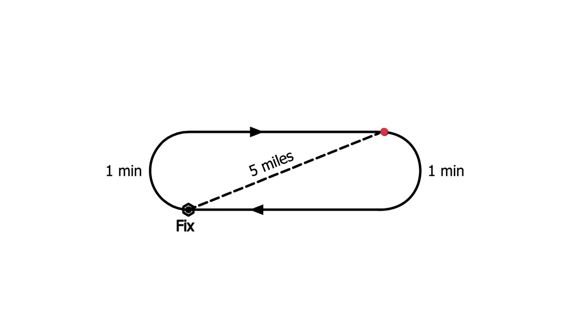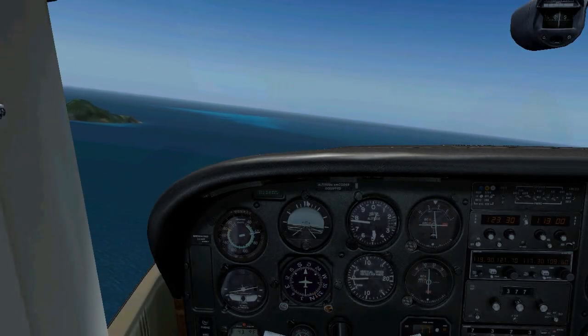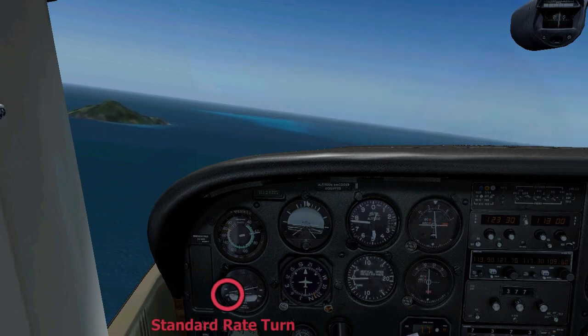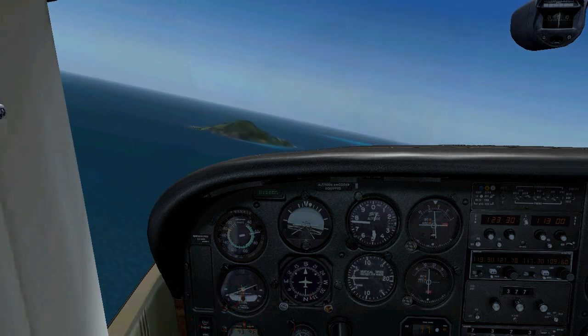Standard rate turns, we already said, are turns where we are turning 3 degrees a second. However, the rate of the turn depends on two things: on our airspeed and our bank. The faster we are flying, the more bank we need for a standard rate turn. At 60 knots, we'll need about 10 degrees of bank for a standard rate turn. At 120 knots, we're going to need about a 20 degree bank turn to maintain a standard rate turn.